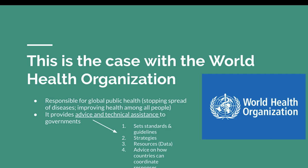The World Health Organization is responsible for global public health — stopping the spread of diseases and improving health among all people. It provides advice and technical assistance to governments. For example, if a country in Africa or Europe like Italy is struggling with the coronavirus and lacks an effective strategy, they would talk to the WHO, which would then provide standards and guidelines — such as aggressive testing, social distancing, or contact tracing.